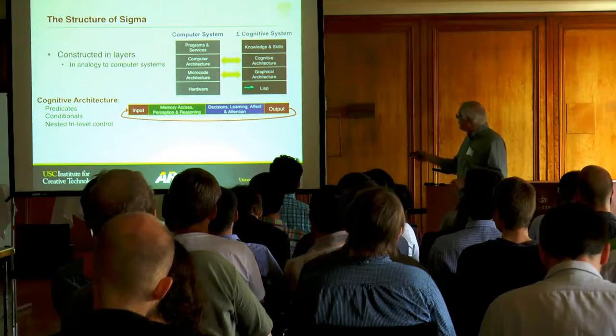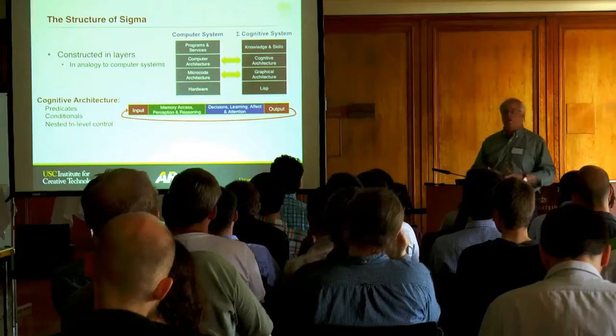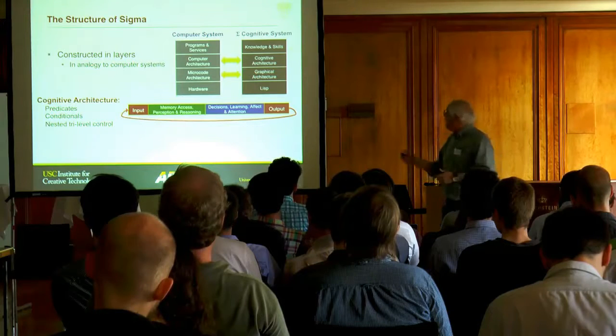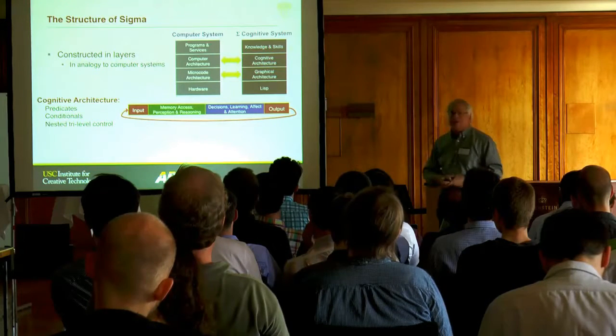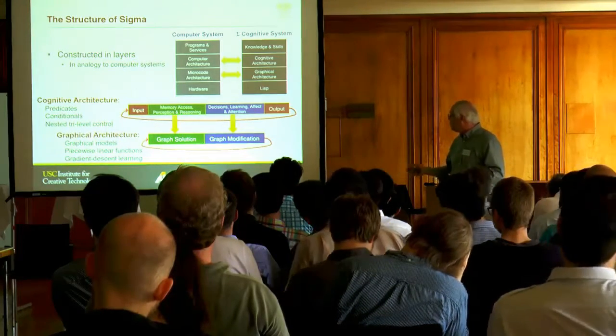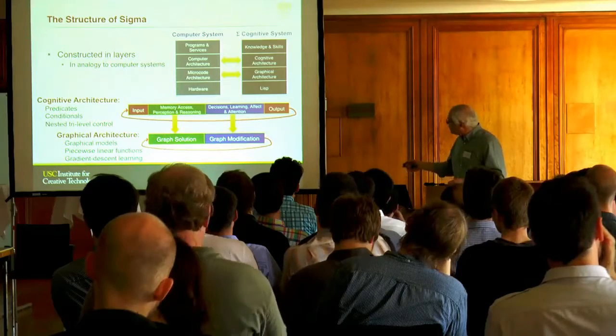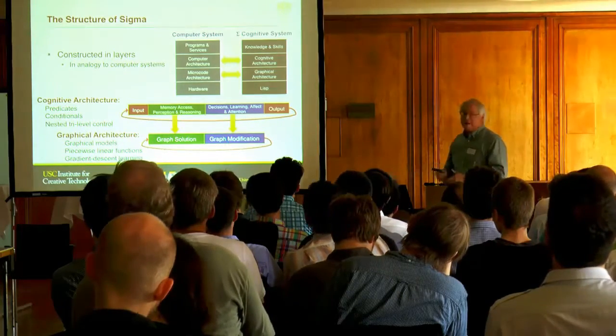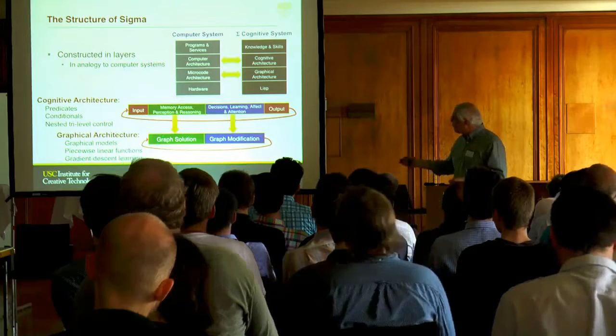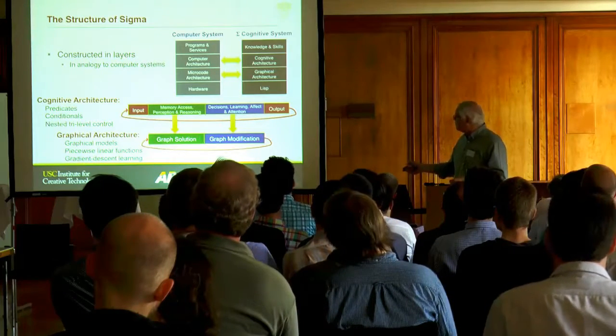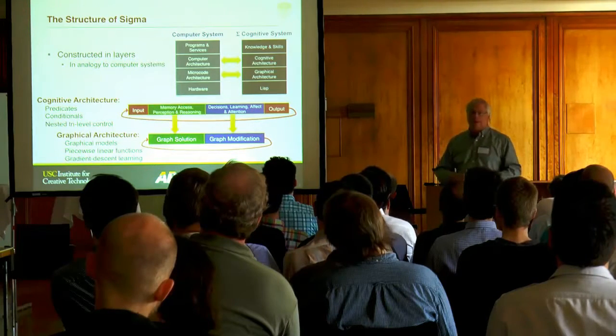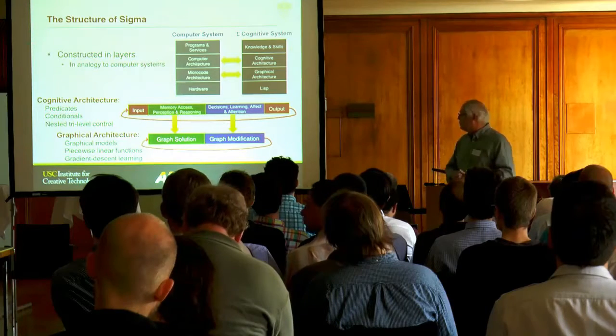Below that is the graphical architecture, which roughly maps onto the microcode or firmware layer. It provides a lower level of programmability between the hardware and the regular architecture and serves to implement the level above. The graphical architecture is based on notions of graphical models, piecewise linear functions, and gradient descent learning. What's important is that all of elaboration maps onto graph solution, and all of adaptation maps onto graph modification.